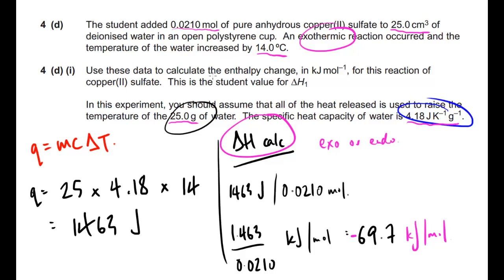This is really the only other type of question you could get relating to Q equals MC delta T. So there you have it: I've looked at calorimetry briefly, what it means, looked at the equation Q equals MC delta T that you need to learn, applied it to a fuel-burning question, and then to another more chemical question. Both follow very similar lines. If you have any problems or questions, please stick them in the comments — I hope that's been of some help.